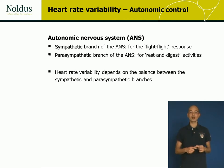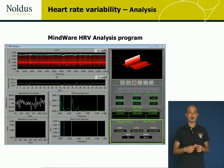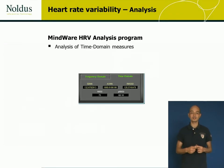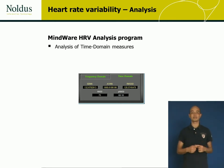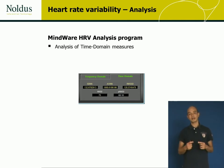Time domain measures of heart rate variability that are commonly used include the SDNN, which is the standard deviation of all normal-to-normal interbeat intervals. This measure is indicative of the balance between the sympathetic and parasympathetic branch of the autonomic nervous system. Another time domain measure is the RMSSD, which is the root mean square of successive differences in interbeat intervals, and this is indicative of parasympathetic activation. RMSSD divided by SDNN is then indicative of sympathetic activation.